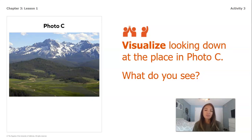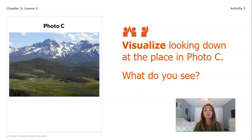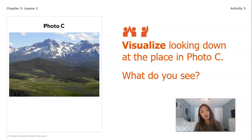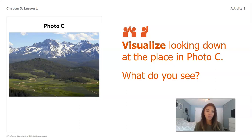We're going to do the same thing with photo C. Visualize looking down at the place in photo C. Again, think about: do we see highland? Do we see very highland? Do we see lowland, water, and so on.